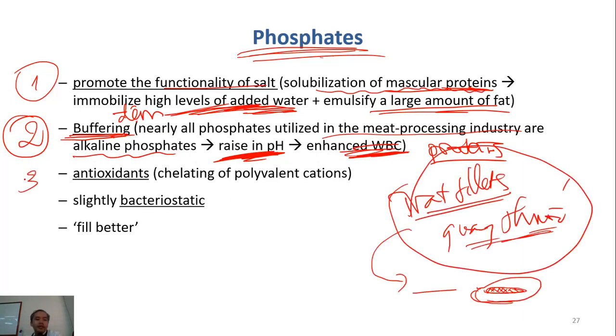And then the third role of phosphates, they are antioxidants because they have many negative charges, polyvalent, negative valent. They can capture, they can hold the cations, they can hold ferrous iron, for example, they can hold copper, for example. They hold these metals, these cations very strongly, and then these cations cannot stimulate oxidation anymore.